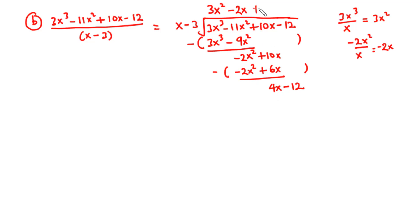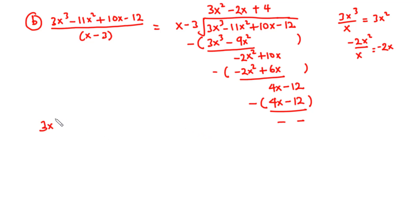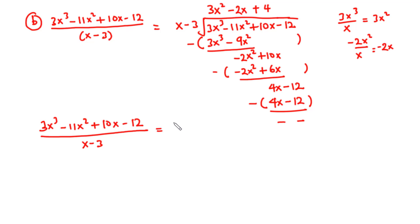So we have plus 4. Then 4 times x is 4x, and 4 times negative 3 is negative 12. When you subtract the two expressions, you have 0 as the remainder. So it follows that 3x cubed minus 11x squared plus 10x minus 12 divided by x minus 3 is equal to 3x squared minus 2x plus 4.